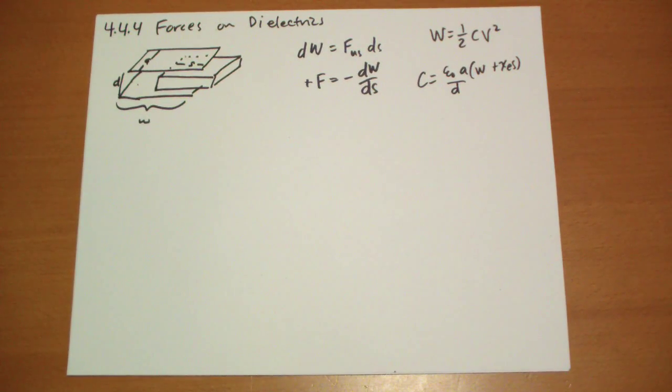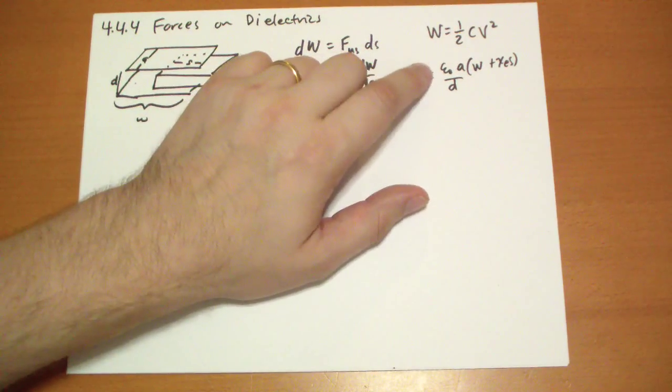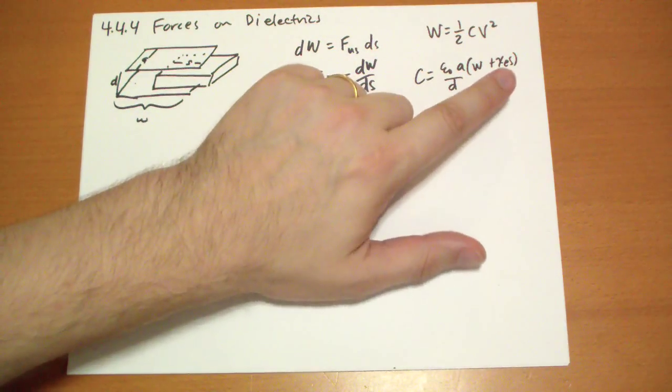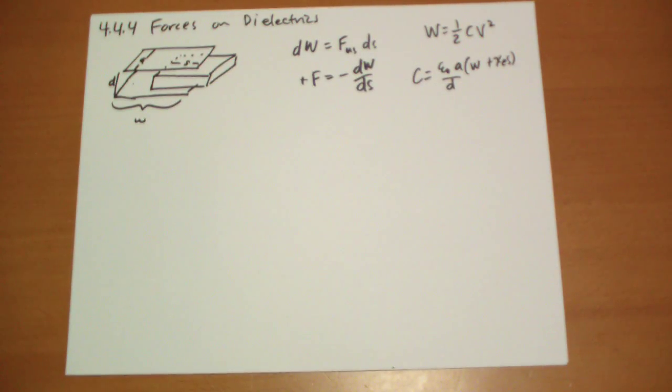So if we had a capacitor that was pure vacuum, it would just be epsilon naught AW over D. But we don't, so we have to include this component for how far this thing is inserted. It's going to change the capacitance of the configuration.